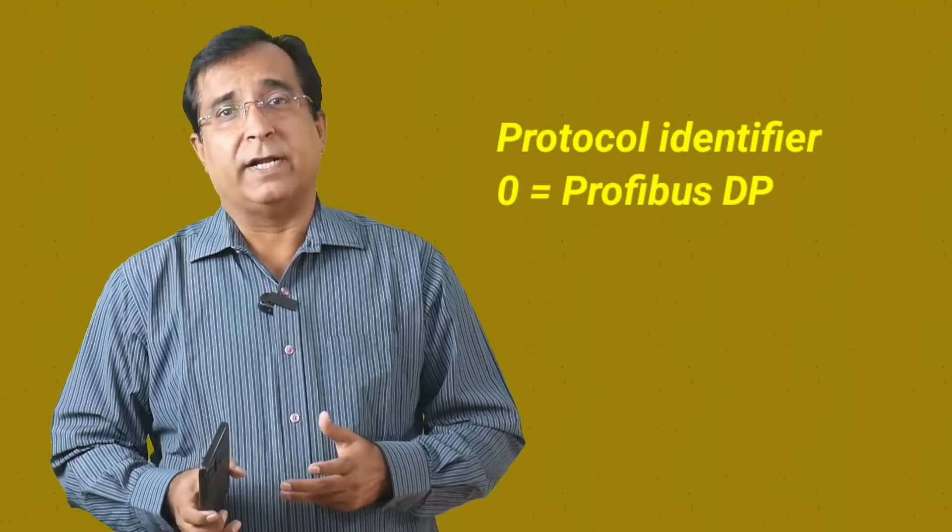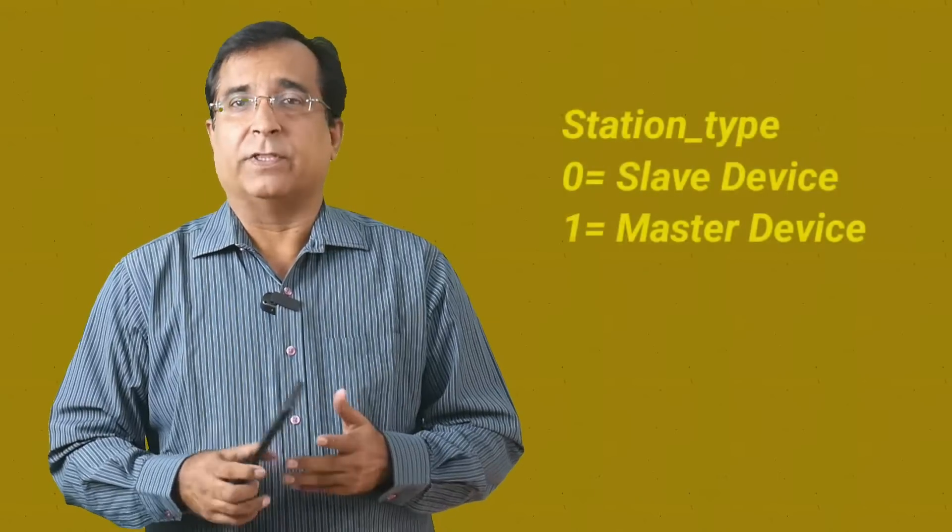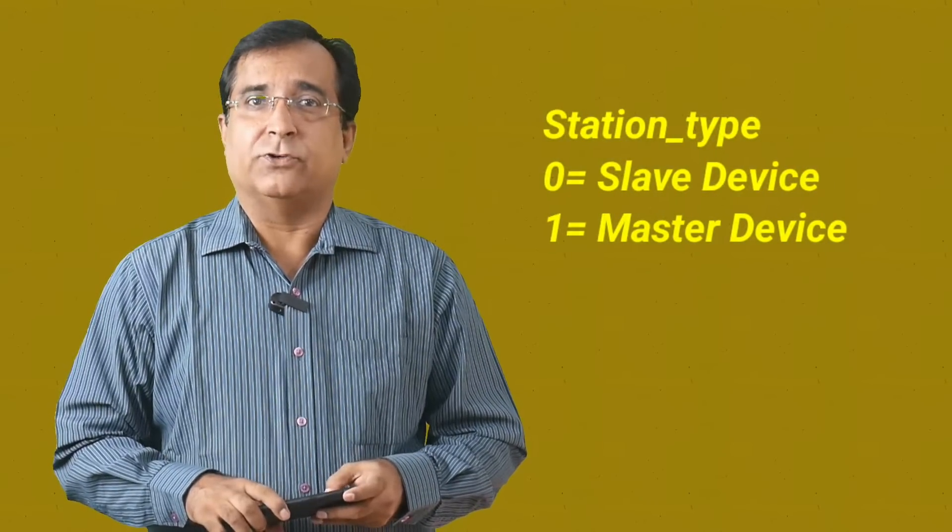Then comes protocol identifier. This is 0. 0 is sent for Profibus DP, and here you can assign 16 to 255 values for different protocols of DP bus. Then comes station type, whether it is a slave device or master device. 0 for DP slave, 1 for master device.